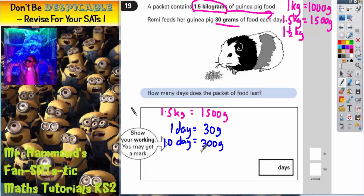Now it wouldn't actually take us that long to count up in 300 before we get to 1,500. So let's have a look what happens if we do that. If 10 days is 300 grams,